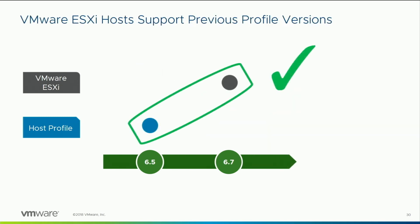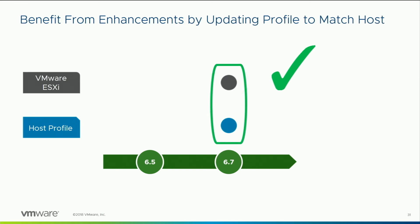What you want to do is upgrade your host first, then depending on your workflow you might upgrade the first host, extract a profile, attach it back, test it out, and if you're happy, proceed upgrading. It's important to eventually get on the matching version of the host profile because with each release we add new settings, capabilities, and resolve bugs. You can't benefit from those fixes unless you actually get up to that new version.